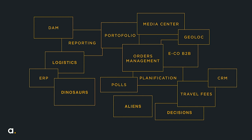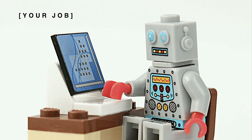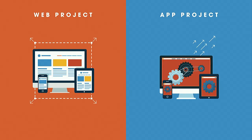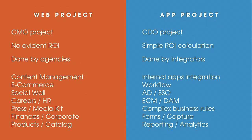The idea is probably to get rid of jobs within the company — replace them all by robots and automation. But before that, let's see how different a web project is from an app project. A web project is usually piloted by the CMO, CDO, communication officer. You cannot say building your website will make you 30% growth in sales. It's done by agencies like LBI, Digitas, Publicis. The keywords are content management, e-commerce, social walls, careers, HR, press release.